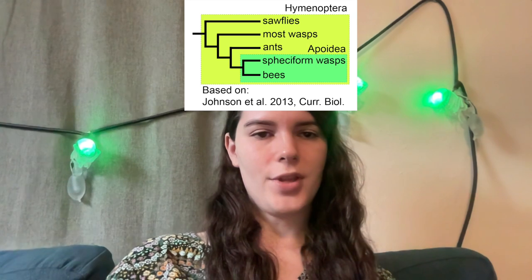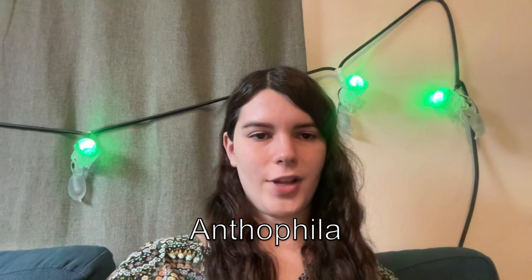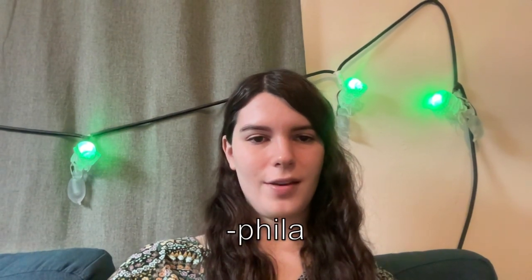Bees are part of a subgroup called the Apoidea, which comes from the word apis. So just like the word humanoid means something that's human-shaped, Apoidea includes bees along with some of their close relatives that look similar. The true bees are then a slightly more specific subgroup called the Anthophila, the flower lovers — that's antho, like a flower's anther, and phila, like philanthropy, which is literally love of humanity. It's a pretty fitting name since loving flowers and eating pollen specifically is kind of the bee's whole deal.